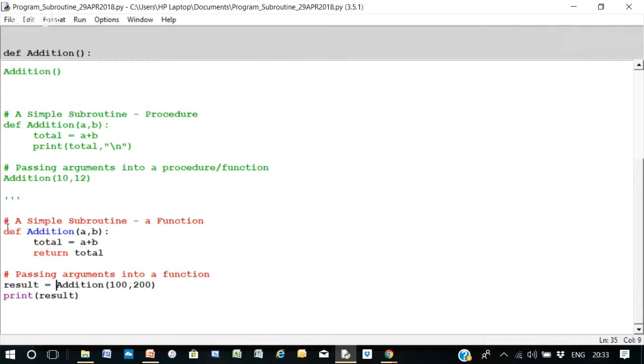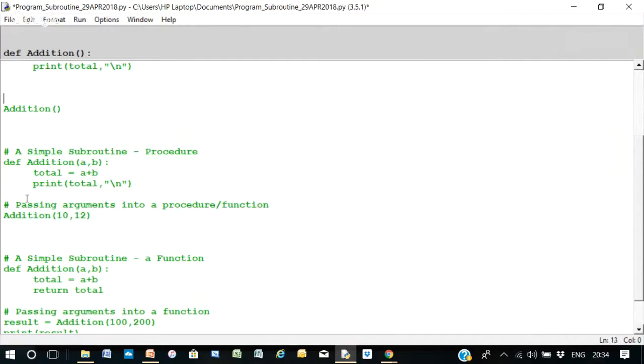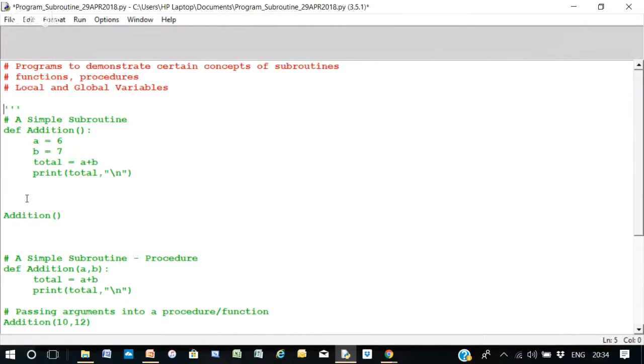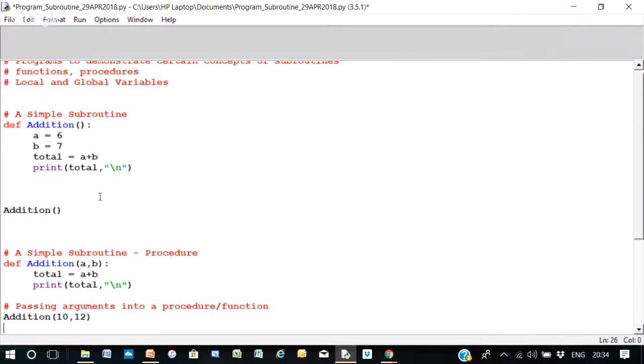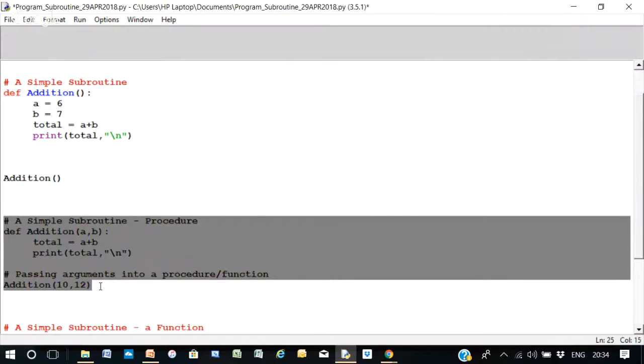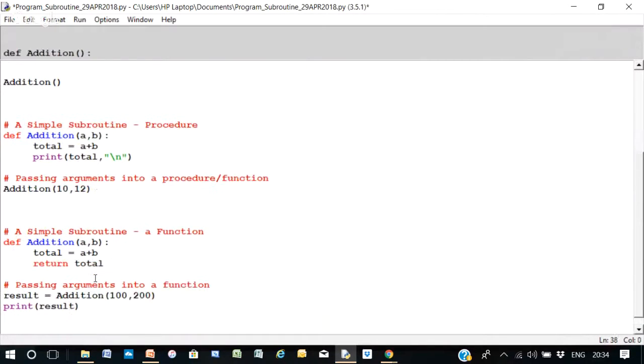Now, this is technically known as a function because a function returns a variable, returns a result. See, we can tell it's a function because it's returning. And here, this is really known as a procedure because it's not returning anything. And this here is also known as a procedure because it hasn't returned anything. But this is returning a result, so it's known as a function.